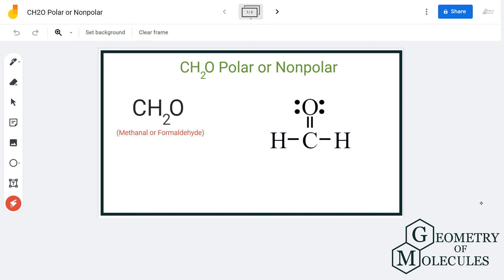To understand its polarity, we will first look at its Lewis structure. Here is the Lewis structure where the carbon atom is in the center and the oxygen atom is at the top. The difference in electronegativities can be much higher because oxygen here is the most electronegative atom.